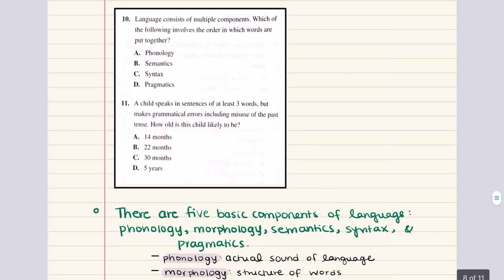Problem ten says language consists of multiple components. Which of the following involves the order in which words are put together? Is it phonology, semantics, syntax, or pragmatics? The answer choice here is syntax. Syntax refers to how words are put together to form sentences and create meaning. Phonology refers to the actual sounds of language. Semantics refers to the association of meaning with a word. Pragmatics refers to changes in usage, wording, and inflection based on context. So again, ten is C.